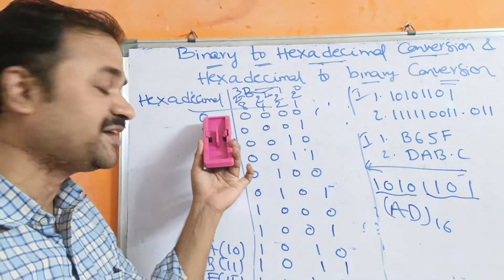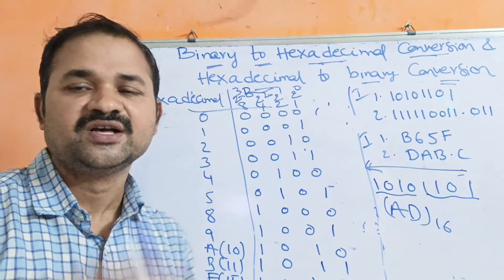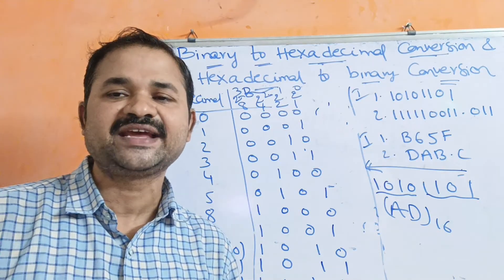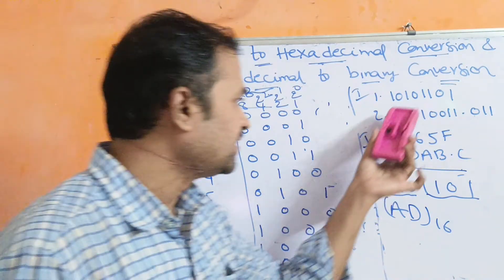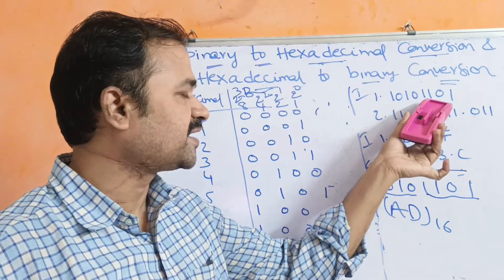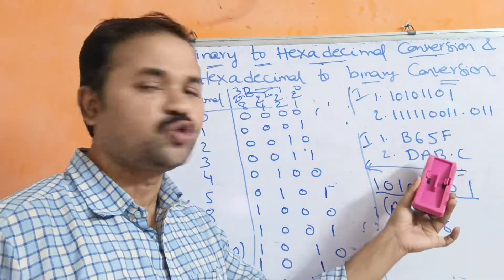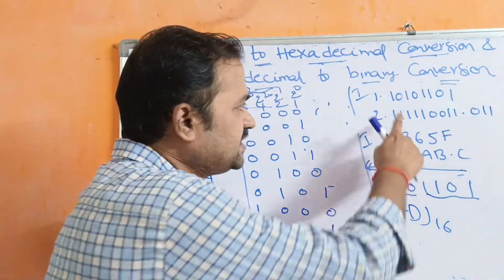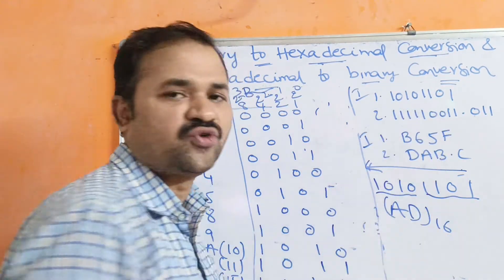So the minimum digit we can represent is 0 and the maximum is F — that is 0, 1, 2, 3, 4, 5, 6, 7, 8, 9, A, B, C, D, E, F. The first two problems are based on conversion of binary to hexadecimal, and the second two problems are based on hexadecimal to binary conversion. The first problem is: 10 10 11 0 1.